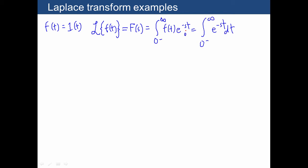I forgot a dt here, where the 0 minus means time just before t equals 0. So what that's intended to mean is that when we compute our integral, if anything interesting happens at time 0, that's actually got to be included in the integral because we're starting just before time 0.